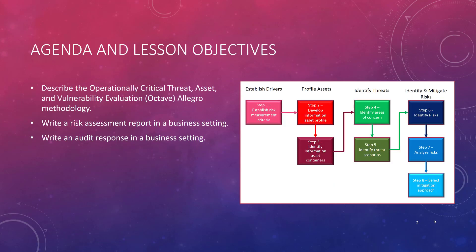Here are the three lesson objectives coming out of Chapter 9. First, we're going to talk about the Octave Allegro risk management framework. Second, we're going to talk about writing a risk assessment report in a business setting. Third, we'll cover responding to an audit — what are the appropriate responses associated with that audit. I've listed out some of those steps associated with the model, but we'll dig into that a little bit later on.